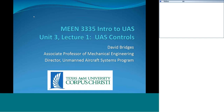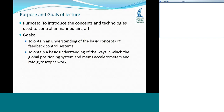Hello, this is David Bridges. MEEN 3335 Intro to Unmanned Aircraft Systems, Unit 3 Lecture 1, UAS Controls. In this lecture we're introducing the concepts and technologies used to control unmanned aircraft. We'll look at the fundamental principle of most control systems today — feedback control systems — and then some of the sensors that provide input to these control systems: Global Positioning System, MEMS accelerometers, and rate gyroscopes, and how they work.